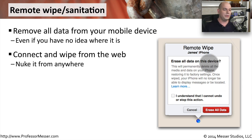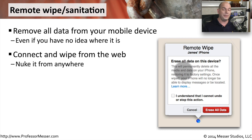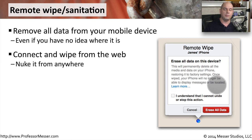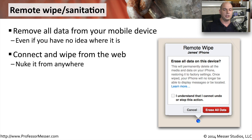This is the remote wipe screen from my iPhone. I've logged in and chosen to do a remote wipe, and it tells me this will permanently delete everything on your mobile device. Once wiped, your iPhone will no longer be able to display messages and you won't know where it is — it's completely factory reset. There's even a checkbox that says 'I understand, I cannot undo or stop this action.' But if somebody has access to your mobile device, a remote wipe may really be the best thing to do.